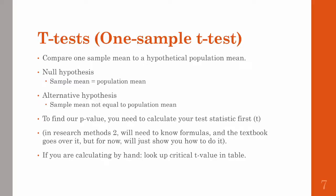In future classes you'll learn how to do this by hand, which involves looking at critical values in a table from a book that allows you to classify whether an effect is sufficiently large enough or not. But for now, I'll just show you how to do it in JASP.